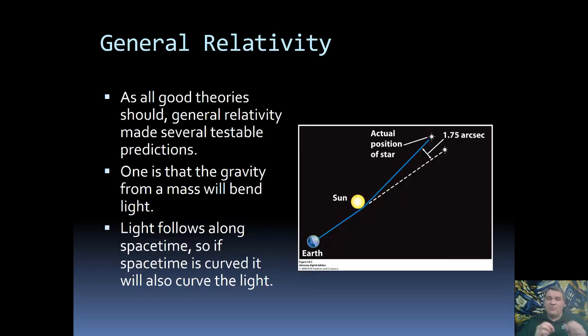Now, any good theory needs to make testable predictions. That's one of the hallmarks of science. This does make testable predictions. One of these is that gravity should be able to bend light. Let's go back to the ideas of Isaac Newton. With Newton, gravity equals the mass of the two objects divided by their distance squared. Well, the mass of light is zero. Light has no mass. So the force of gravity is going to be zero. There's no force of gravity on light, which means no acceleration. What this means is, according to Newton, all light should travel on perfectly straight lines.